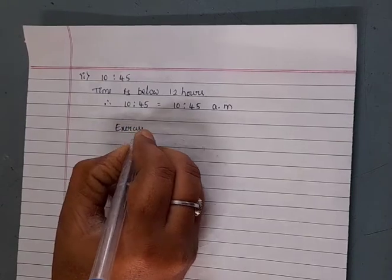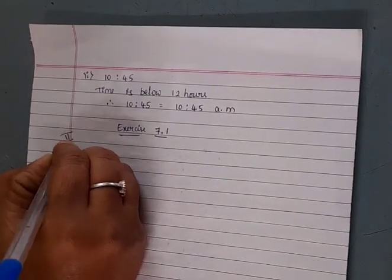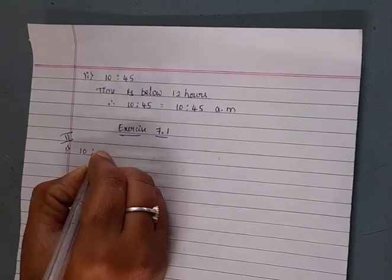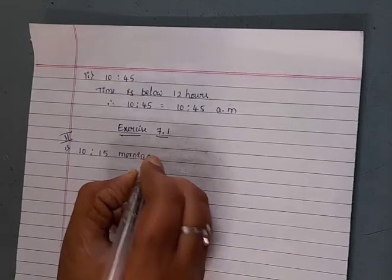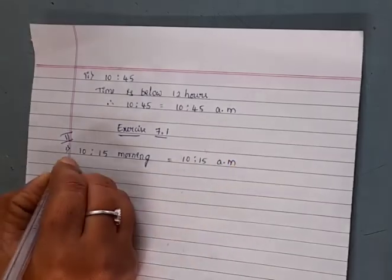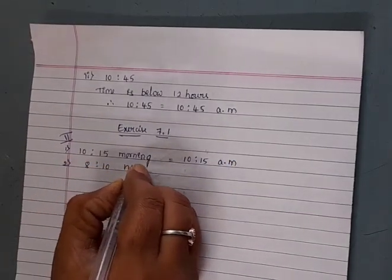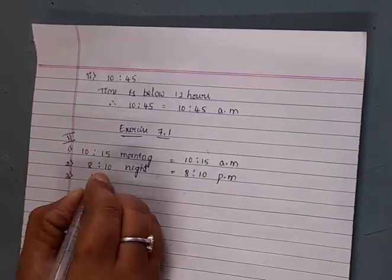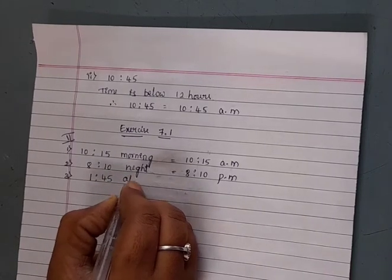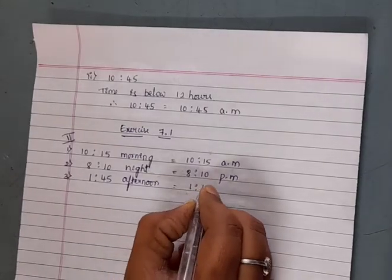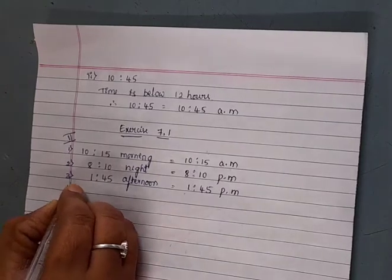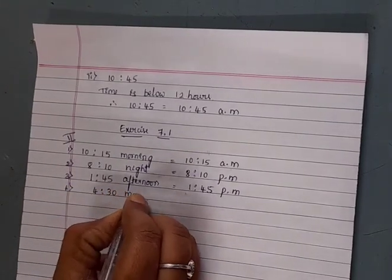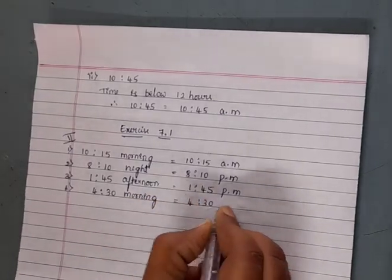Now we move on to Exercise 7.1. Denote the following timings in AM and PM. First: 10:15, morning — 10:15 AM. Second: 8:10, night — 8:10 PM. Third: 1:45, afternoon — 1:45 PM. Fourth: 4:30, morning — 4:30 AM.